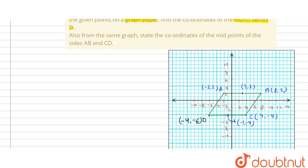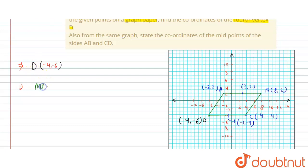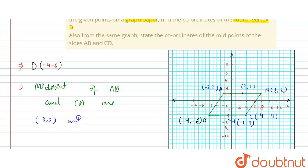In the graph we have put all the information. The coordinate of D is (-4, -6) — this is our first answer. For the second answer, the midpoints of AB and CD are (3, 2) and (-1, -4) respectively.